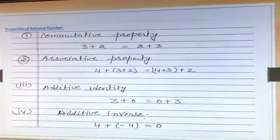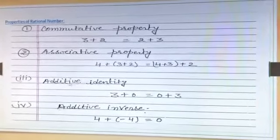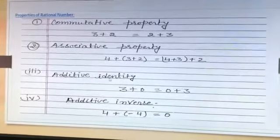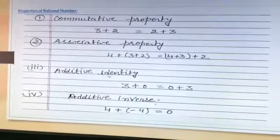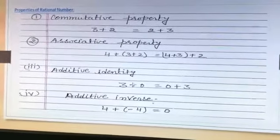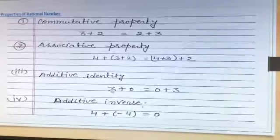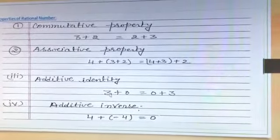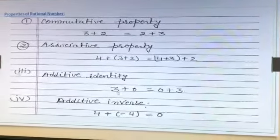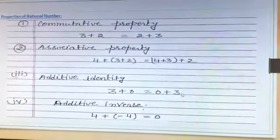Next property is additive identity. Additive means add, and identity means pehchan — recognition. So what do we have to add so the number will remain the same? If the number is 3, we add 0. So 3 plus 0, or 0 plus 3, the answer will be 3.